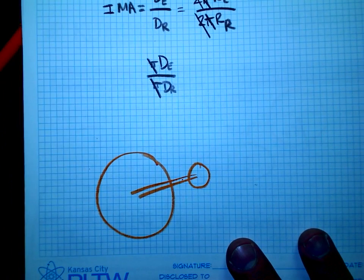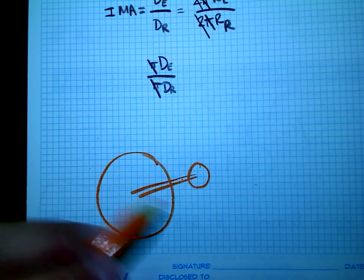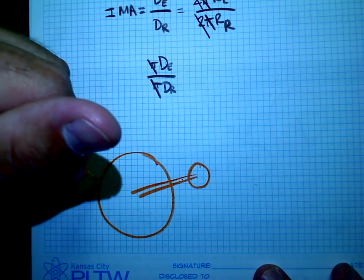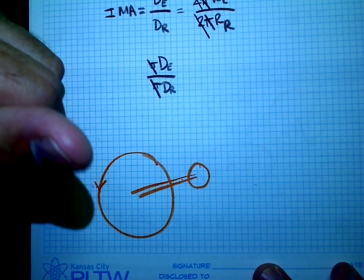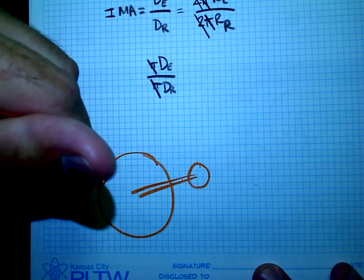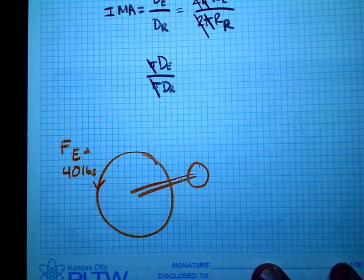So now let's say then, this time instead of giving distances here, it's the same wheel and axle, so 8 and 4. But let's say this time that I go ahead and I spin and I apply 40 pounds of force here. So my effort, my force, my effort is 40 pounds.